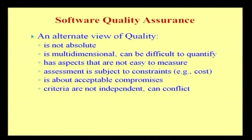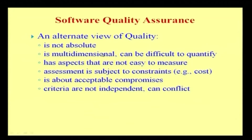As an alternate view to quality, quality is not an absolute value. Quality is multidimensional and can be difficult to quantify. There is a distinction between quantification — which is in terms of numbers, such as the number of pages added when a product got developed — and quality, which is something produced as per the expected needs of the customer or end user. Quality is multidimensional and can be difficult to quantify.